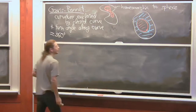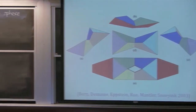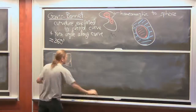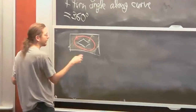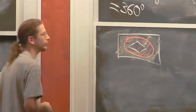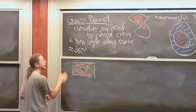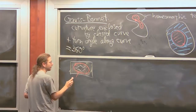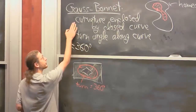Now let's use Gauss-Bonnet to prove that a hole cannot appear in an unfolding of a convex polyhedron. Suppose you have an unfolding with a hole. Take a closed curve that walks around the hole but stays inside the unfolding. By Gauss-Bonnet, the curvature enclosed plus the total turn angle of the curve equals 360. Since the curve is a planar walk, the total turn angle is 360 degrees, so the curvature enclosed must equal 0.